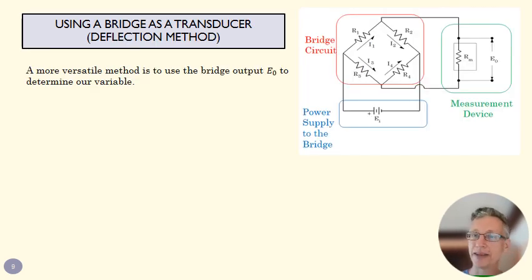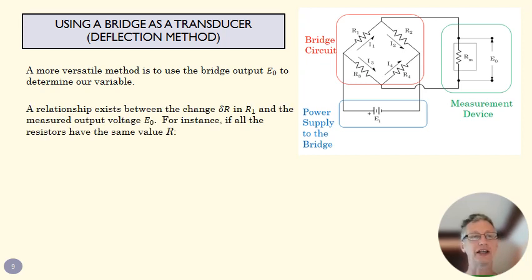Now that method, the null method, requires that we adjust a potentiometer, that we look at a galvanometer to see if there's a current. That's not going to work if we have a really fast changing signal, like a beam vibrating, for instance. And so what we use instead is a deflection method. A deflection method, rather than measuring just whether there's a current,